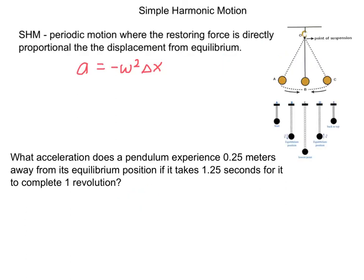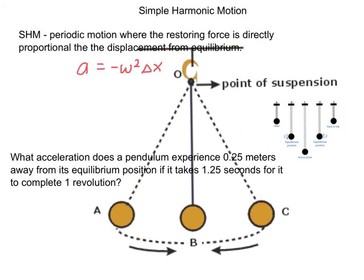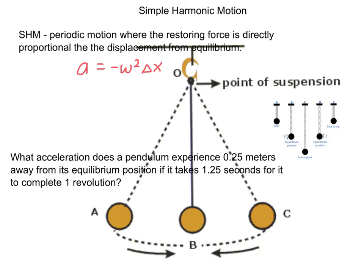Next, I want to introduce a specific type of periodic motion: simple harmonic motion. That is periodic motion where the restoring force is always trying to point back towards equilibrium, and it is directly proportional to how far away from equilibrium you are. Let's use this pendulum as an example. The equilibrium position — right here at point b, at the very bottom — is where the pendulum wants to be at rest.